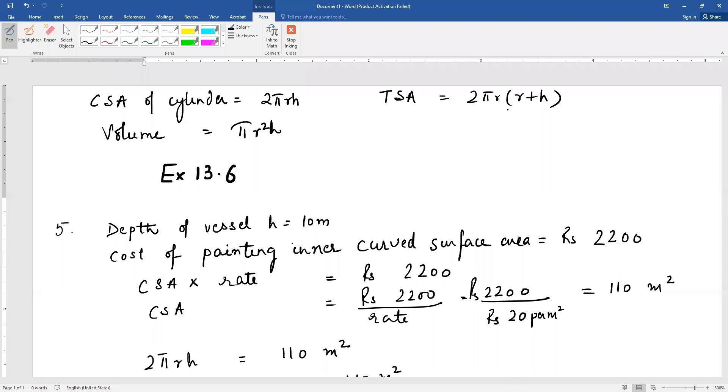Good morning students. As you already know, curved surface area of a cylinder is 2πrh and the total surface area of a closed cylinder is 2πr(r+h), where r is the radius of the base, h is the height of the cylinder, and volume is equal to πr²h. These are all formulas you should remember.